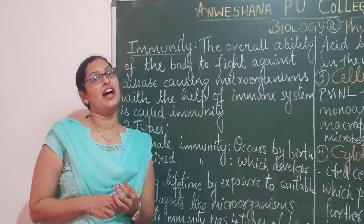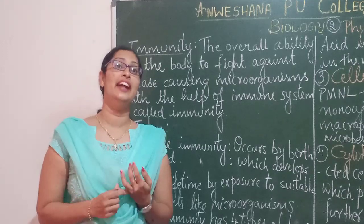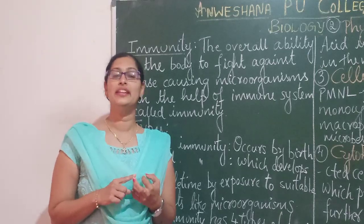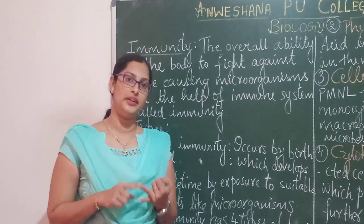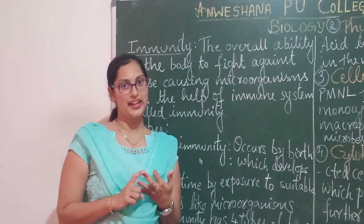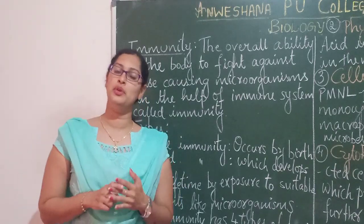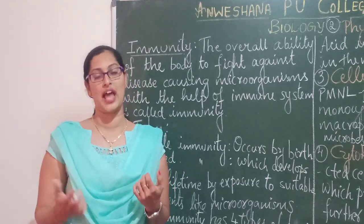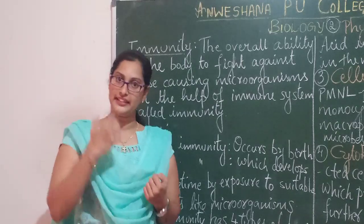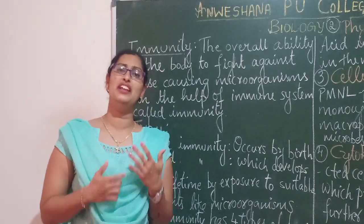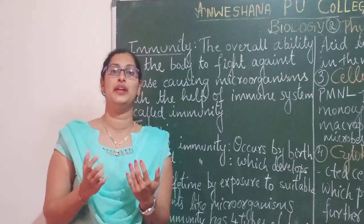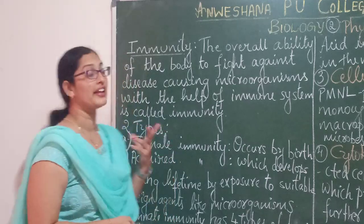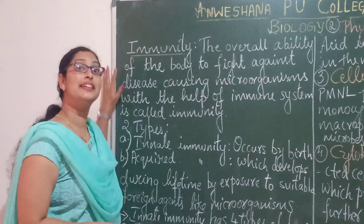For us to be healthy, three systems are very much needed: the neural system, the endocrine system, and the immune system. The main role of the immune system is to fight against pathogens — microorganisms or foreign agents — which enter into our body. There will be a war between the foreign agent and the immune system of our body.